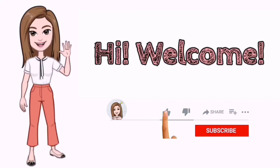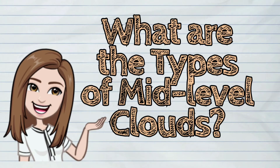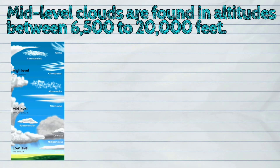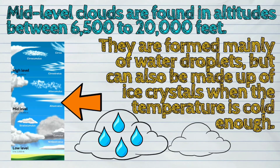Welcome to iQuestionPH. Today's question is: What are the types of mid-level clouds? Mid-level clouds are found at altitudes between 6,500 to 20,000 feet. They are formed mainly of water droplets but can also be made up of ice crystals when the temperature is cold enough.